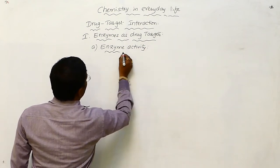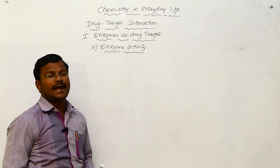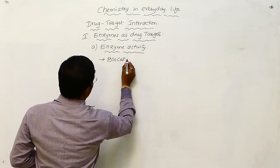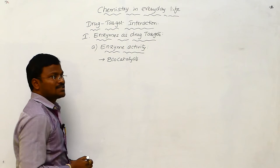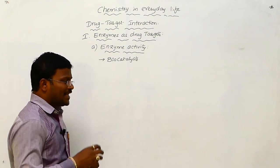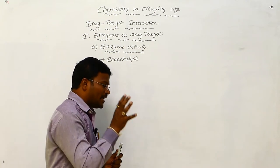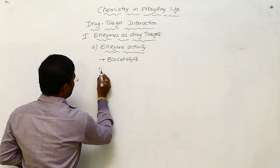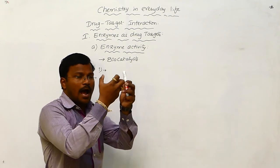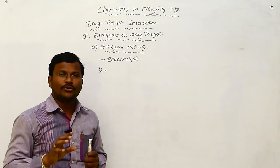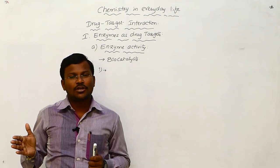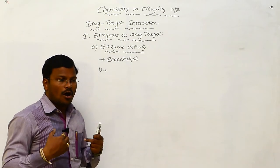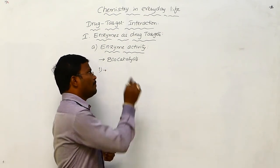Enzyme activity involves two important steps. In the first step, enzymes accept substrate molecules. During biochemical processes, substrate molecules or reactant molecules are converted into products. Inside the body, during biosynthetic processes, all substrate molecules are converted into their related products in the presence of biocatalysts—enzymes.